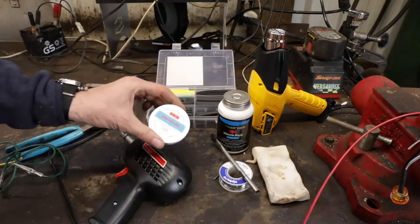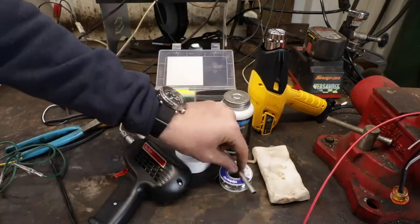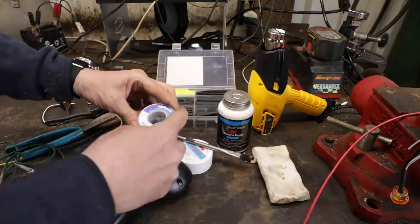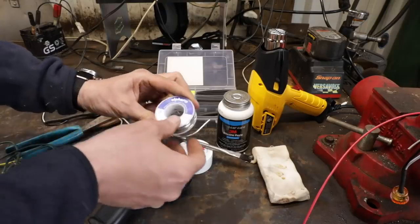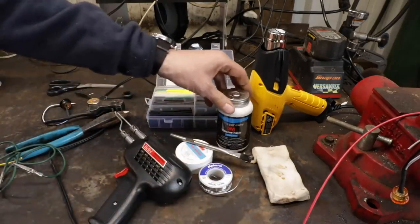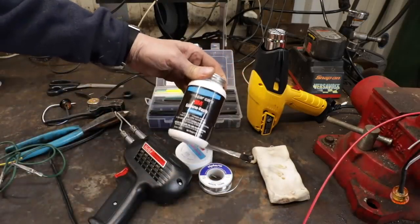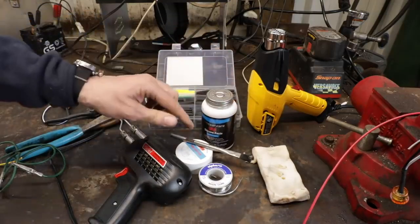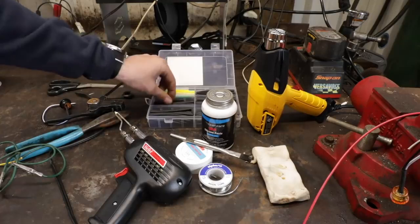You want some rosin paste flux, a little brush, and some rosin core solder. You don't want to use the solder used for plumbing, it's not the right stuff. And this right here, this stuff's amazing. This is a 3M silicone dielectric grease that we use, as well as a good selection of shrink tubing.